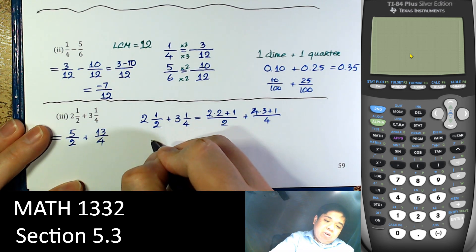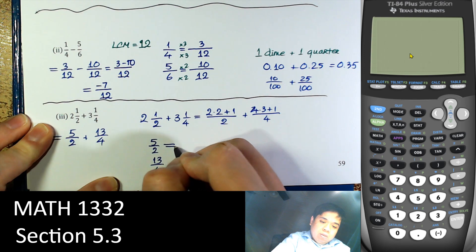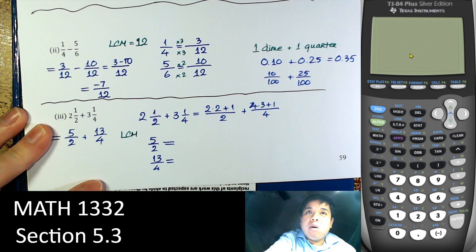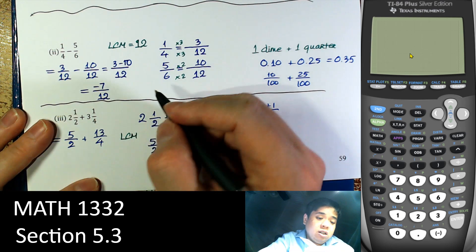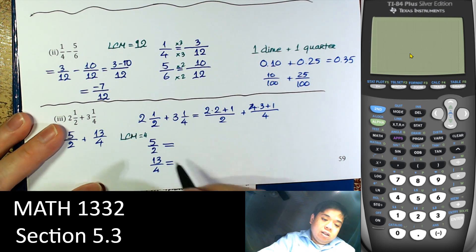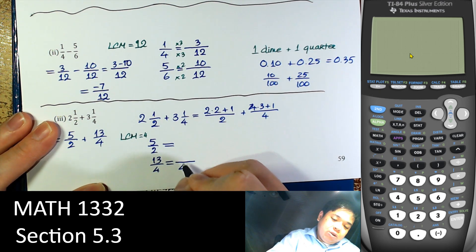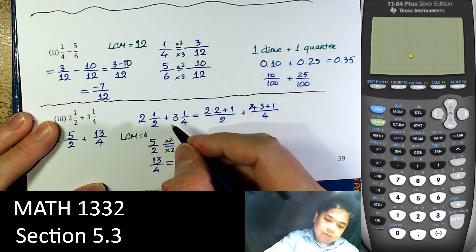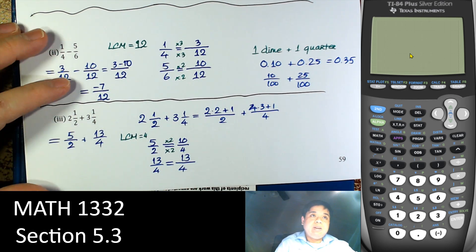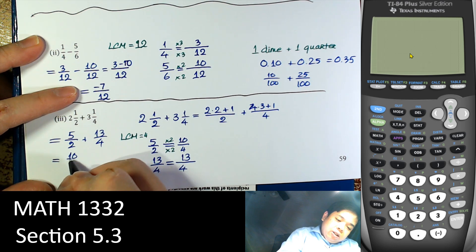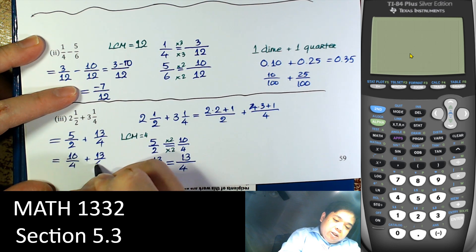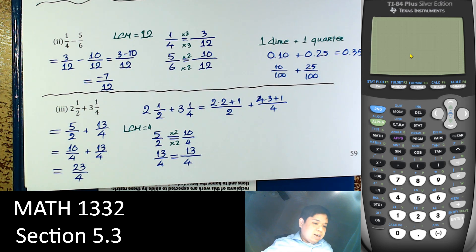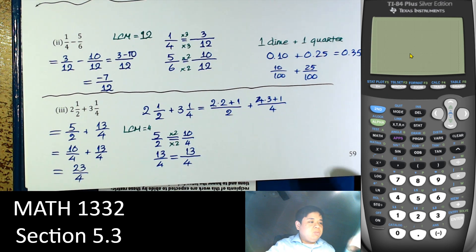So for 5/2 and 13/4: the common denominator is 4, since 4 is divisible by 2. To get 5/2 to a denominator of 4, multiply top and bottom by 2 to get 10/4. Then 10/4 plus 13/4 equals 23 over 4. The answer in improper fraction form is fine — leave it unless we can simplify further.